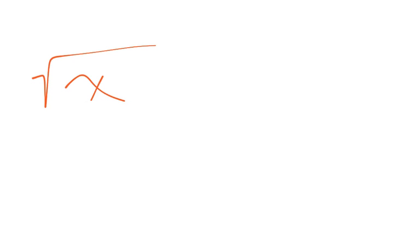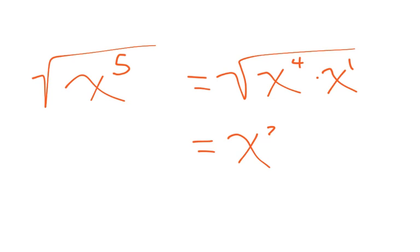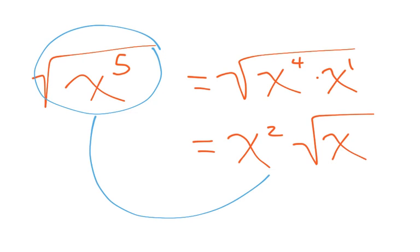Now what if I wanted to take the square root of x to the power of 5? Well, I can treat this as two separate things. The closest even number to 5 without going over times x to the power of 1. Now I can take square root of x to the fourth, and I would bring x squared out, but I couldn't do anything with that other x, so I'm stuck with that. And I want you to see that x to the fifth in a radical gets simplified to look like that.